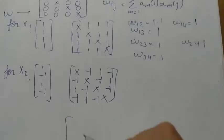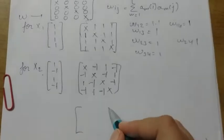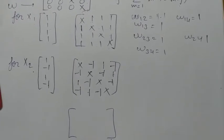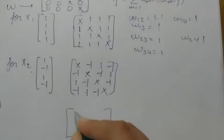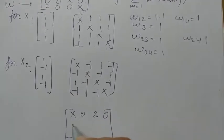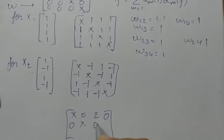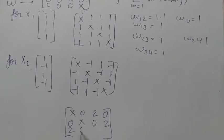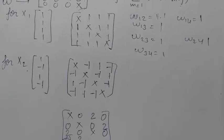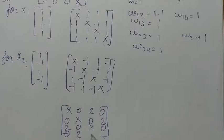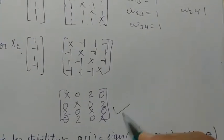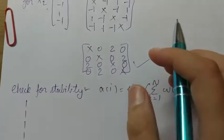Now that the network has learned x1 and x2, our next task is simply to sum up both matrices. The resulting sum matrix has values: the diagonal entries remain as x, and the off-diagonal entries are 0, 2, 0, 0, 0, 0, 2, 2, 0, 0, 2, 0, and 0. Now we have the sum matrix and our next task is to check the stability for x1 and x2.